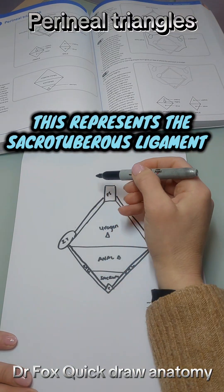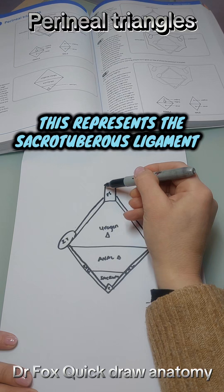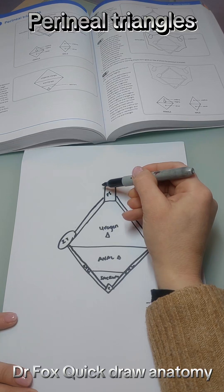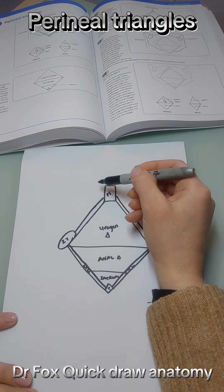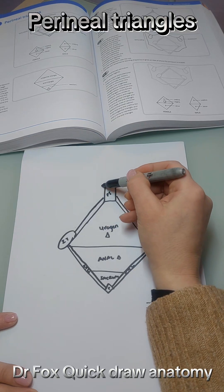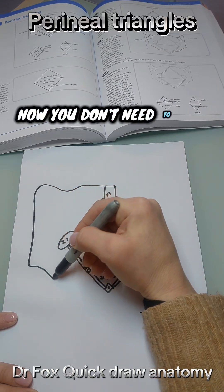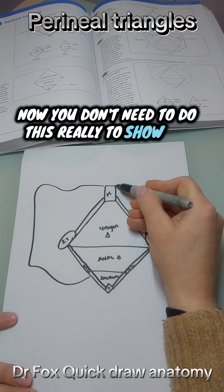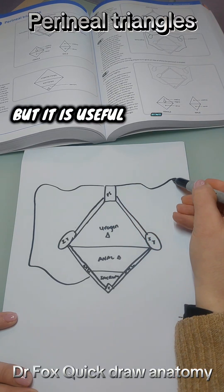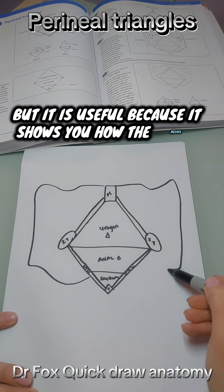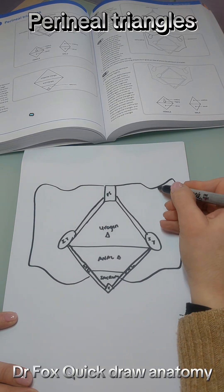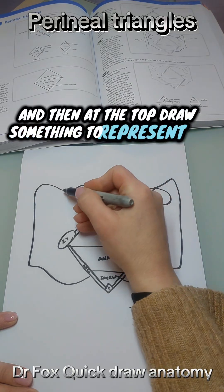From the top of the pubic symphysis, draw a horizontal line towards the left side of the paper and continue it in curves to represent your pelvis. Now you don't need to do this to show the perineum, but it is useful because it shows you how the pelvis sits. Then at the top draw something to represent the acetabulum.